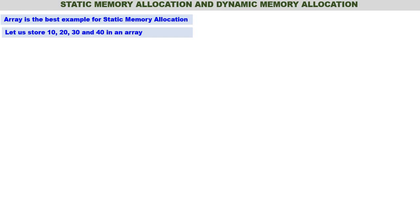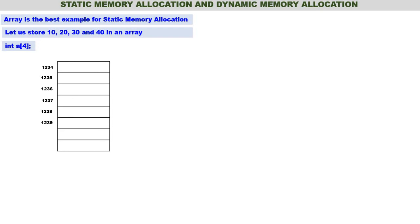Let us store 10, 20, 30, 40 in an array. Since these are integers, we require an integer array. Let us declare an integer array named 'a' that can store four integers. Since each element is of type integer, eight bytes are required for 'a', so eight memory locations have to be allocated.